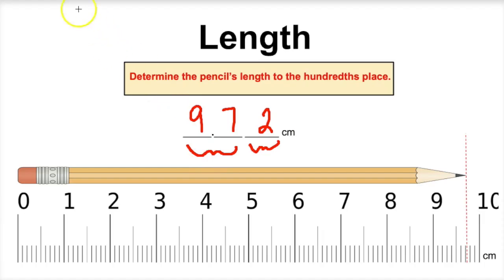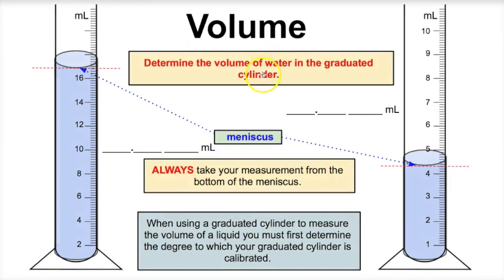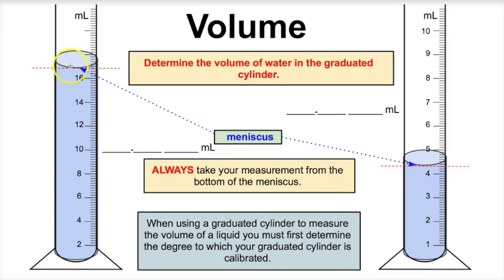Let's take a look at how we're going to use a graduated cylinder to measure the volume of different liquids. We have a graduated cylinder here filled with water, and another one as well. The first thing you'll notice is that if you get down eye level with the graduated cylinder and the level of the water, you will see what is called the meniscus. The meniscus is kind of this bowing or concave little line where the water meets or is inside of the cylinder. We always want to take our measurements from the bottom of the meniscus.